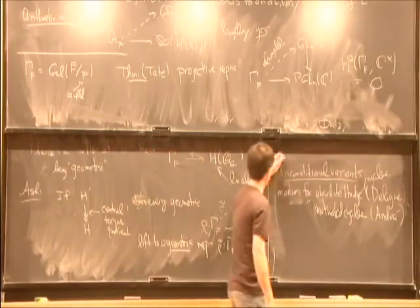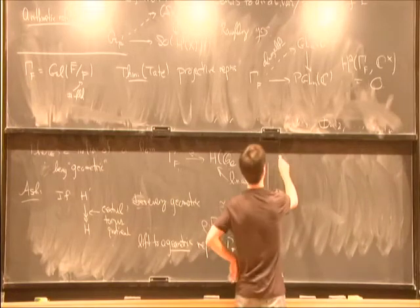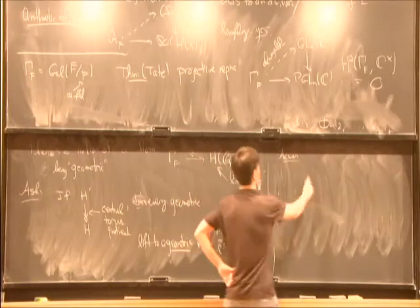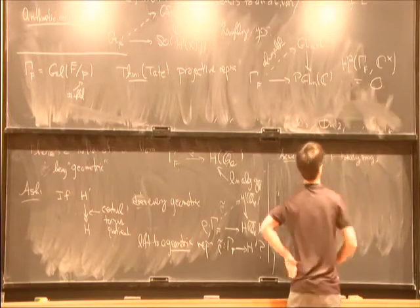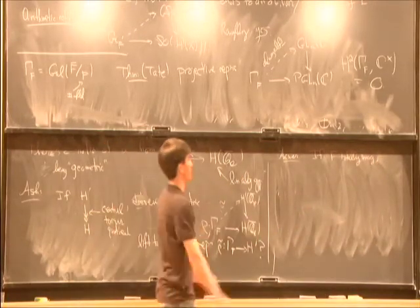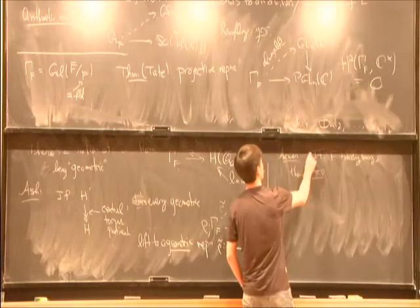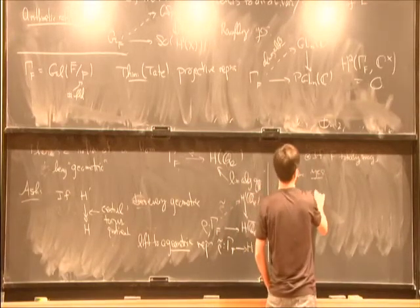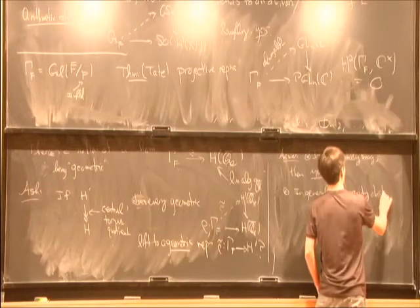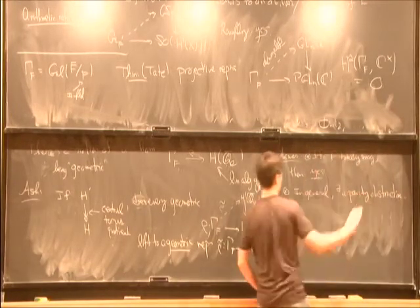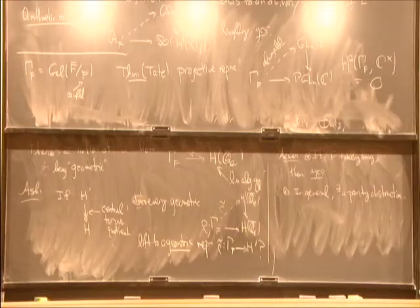We know it lifts by Tate's theorem. But does every geometric ρ lift to a geometric representation? And the answer to that question is usually yes. The answer is typically yes. If F is totally imaginary, so none of its complex embeddings land in R, then the answer to this question is yes. In general, there is a parity obstruction. I won't go into this parity obstruction, it's the subject of another talk maybe. But what this tells you is that most of the time the answer's yes.